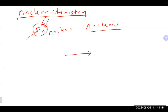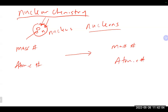When we go to balance nuclear reactions, there are really two things we need to make sure of: the mass numbers on the left will equal the mass numbers on the right, and the atomic numbers on the left will equal the atomic numbers on the right. There is no conservation of elements. The atomic number is the one that will help you determine what the missing element may be.